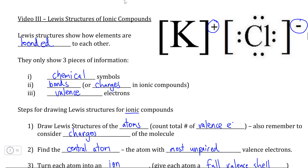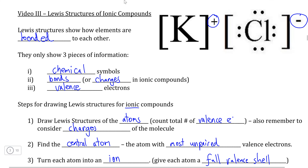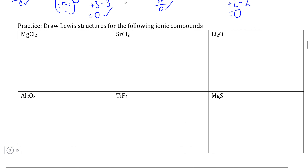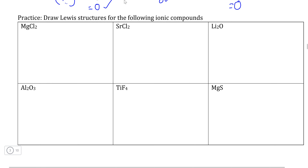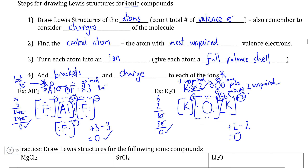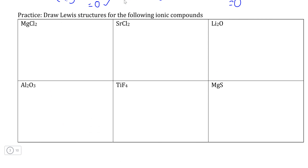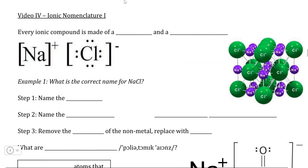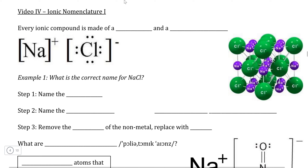Before moving on to the last topic in the series on ionic compounds, you can try the practice problems below, where you will need to identify the number of valence electrons for the metal and non-metal, figure out the central atom, and draw the appropriate Lewis structure following the steps above. Once you are confident in drawing ionic Lewis structures, you can move on to the final topic: understanding how the naming system for ionic compounds works.